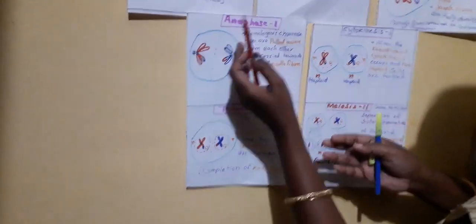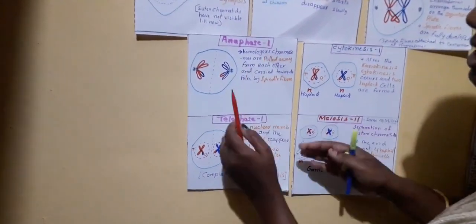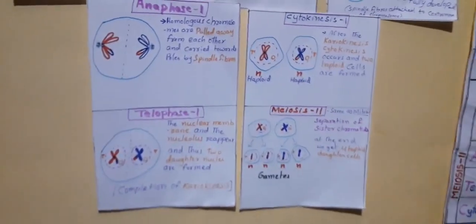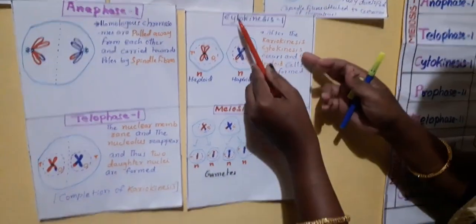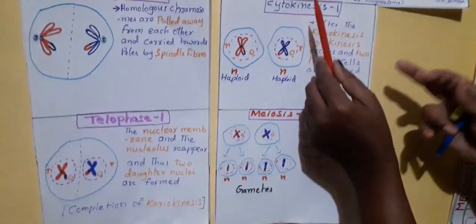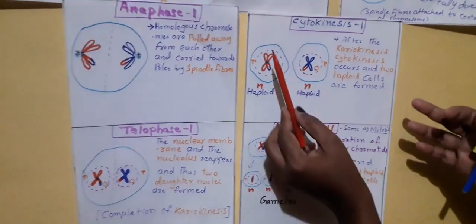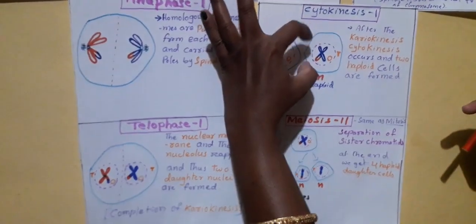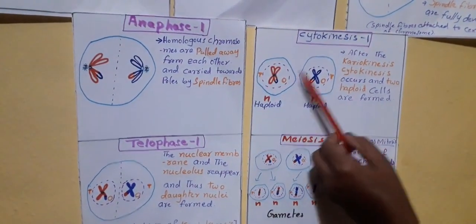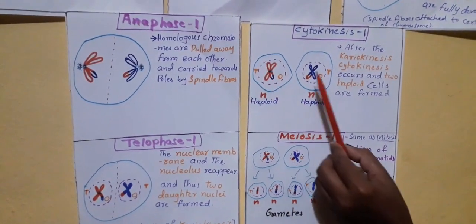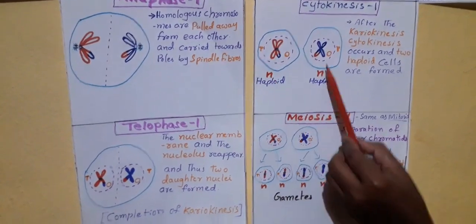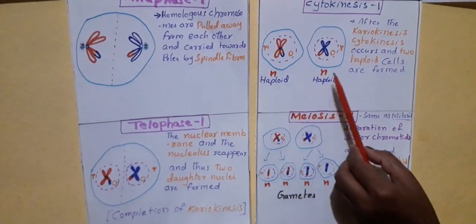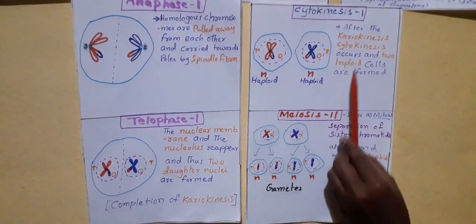From Prophase 1 through Telophase 1, the karyokinesis is completed — division of nucleus is completed. Finally, next is the division of cytoplasm, called cytokinesis. In cytokinesis 1, the nucleus has already divided, and we can see the cell pinches in the middle. After karyokinesis, cytokinesis takes place, and two haploid daughter cells are formed — they consist of a single set of chromosomes.